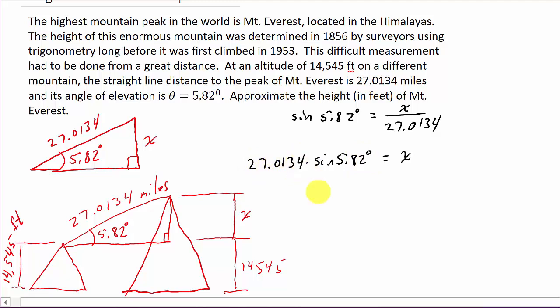Okay, so if I punch this into my calculator, and make sure your calculator is in degrees. So that's 27.0134 times the sine of 5.82.